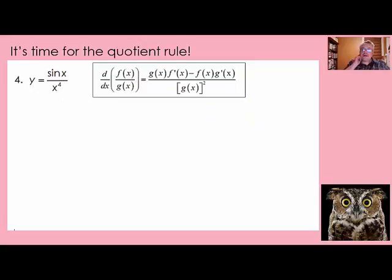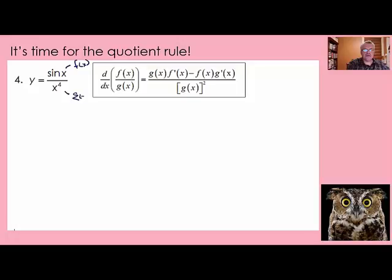Now it's time to up our game a little bit. This is the quotient rule for when we have one function divided by another. In this rule, f of x represents the numerator and g of x represents the denominator. Like the product rule, we simply substitute into the formula to find the derivative.